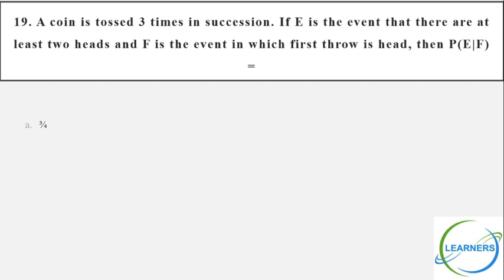A coin is tossed 3 times in succession. E is the event that there are at least 2 heads, and F is the event that the first throw is a head. Find P(E|F). E and F are given verbally. If the question asks P(A|B'), the same formula applies: P(A|B') = P(A∩B') / P(B').